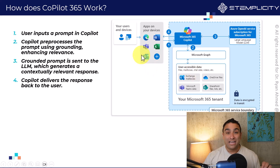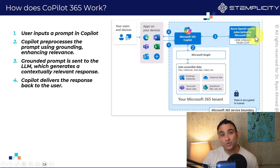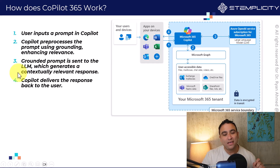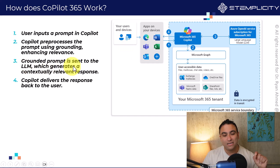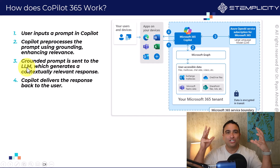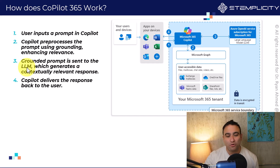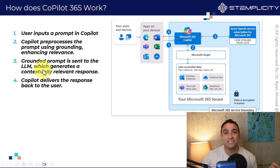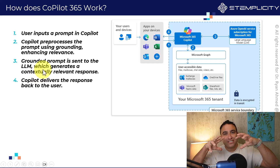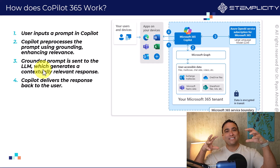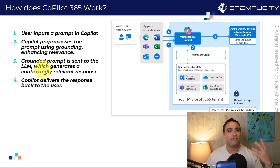What's going to happen next is Microsoft Copilot is actually going to talk to a large language model, like the GPT-4 model, for example. This is going to be step number three. The grounded prompt is sent to the LLM, or large language model — think of it as a digital brain that we've covered before — which generates a contextually relevant response. That response is going to be contextual because it understands your content, has access to your emails, your OneDrive information, and so on.